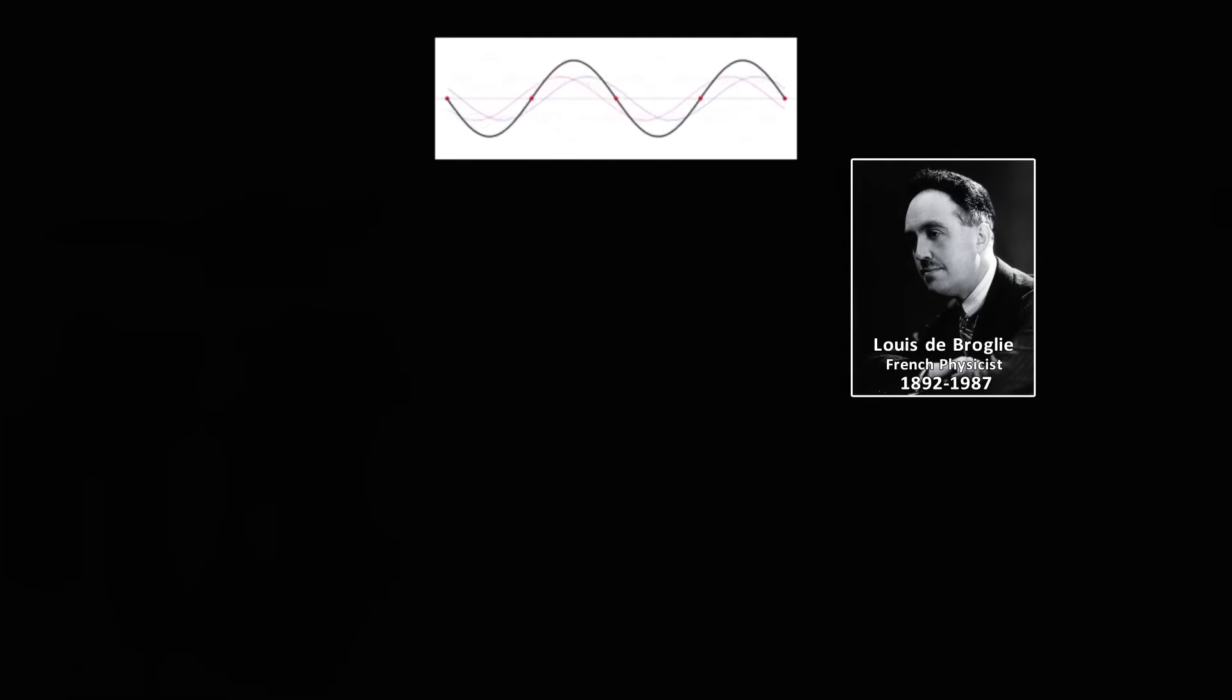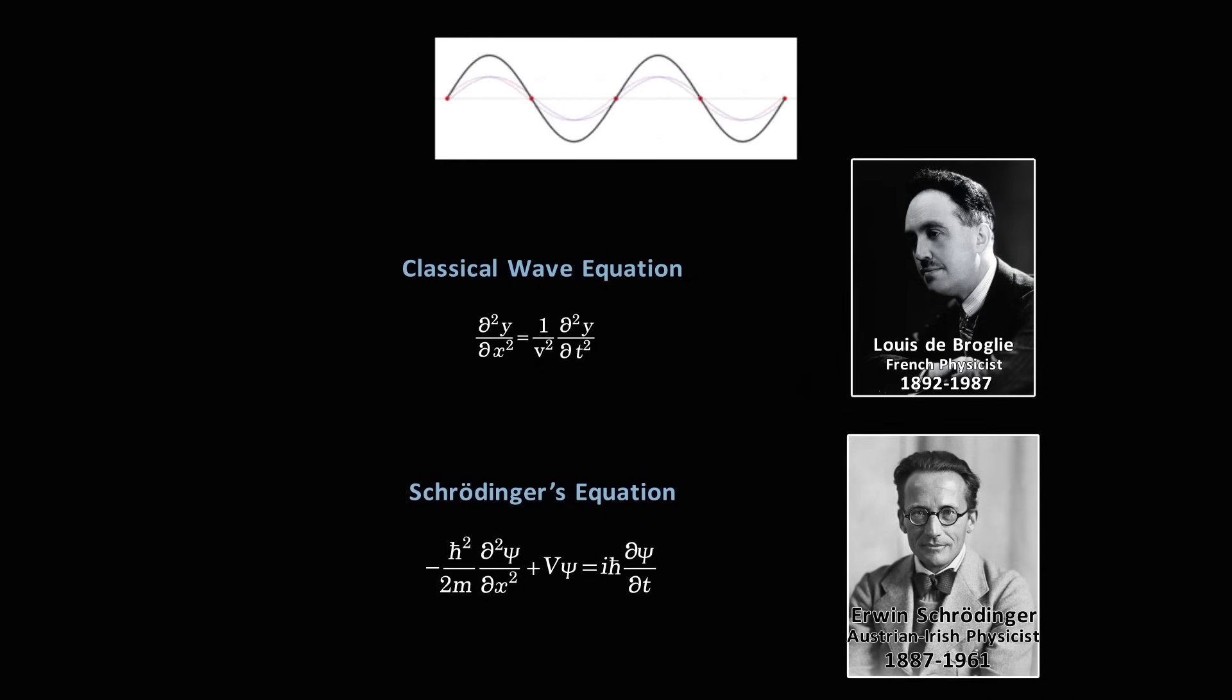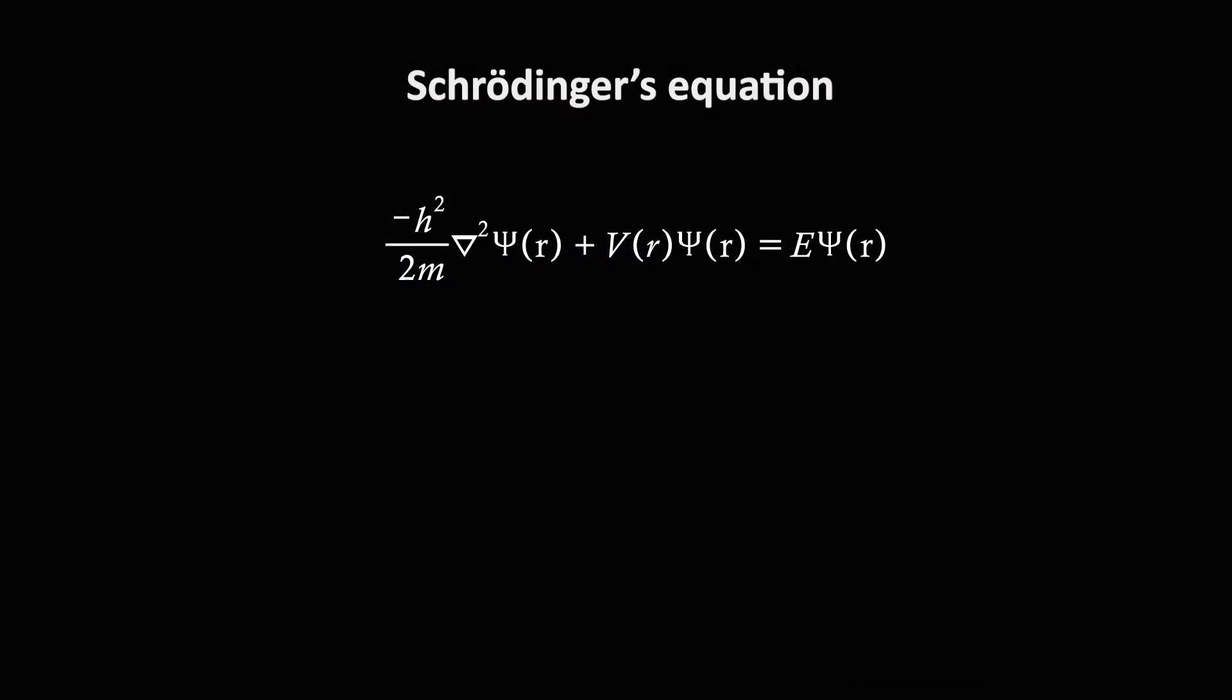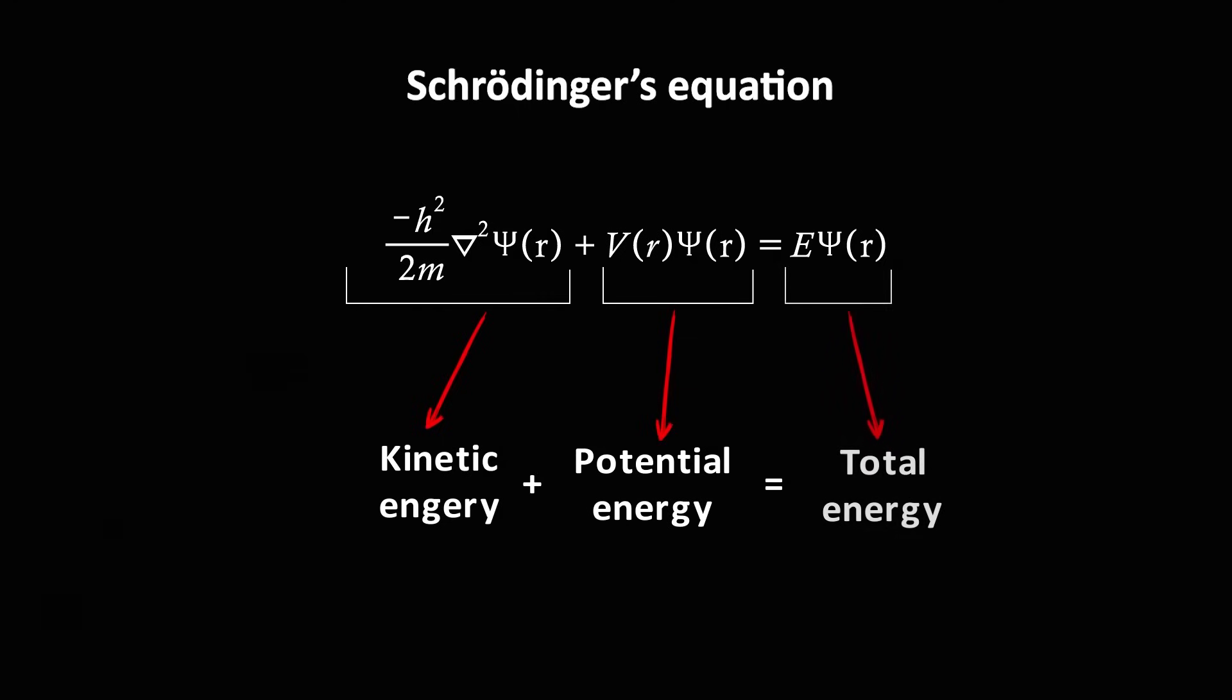He was picking up on the suggestion of French scientist Louis de Broglie that maybe quantum particles can behave like waves. Schrödinger came up with an equation to describe this waviness, and it looked a lot like the equation scientists had used to describe ordinary waves, like those in water. This equation may look complicated, but at its heart is just an equation describing energy. Kinetic energy plus potential energy equals total energy.